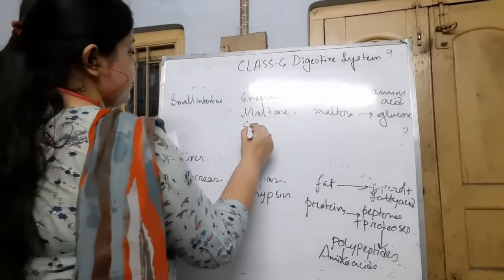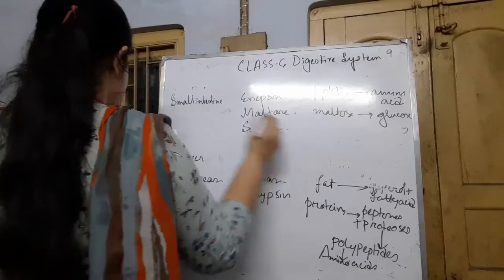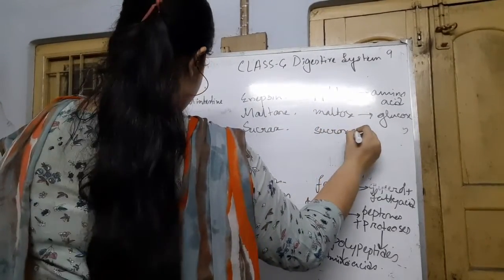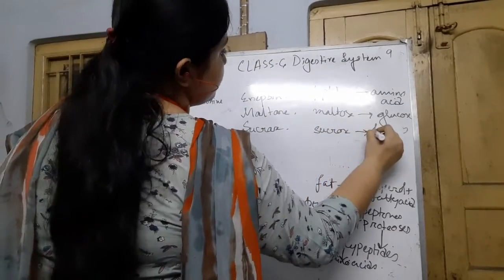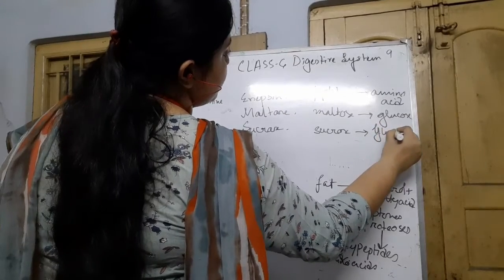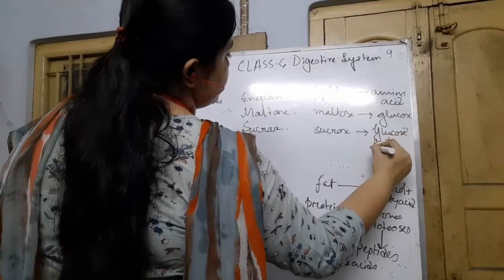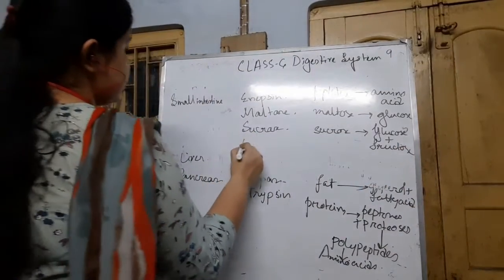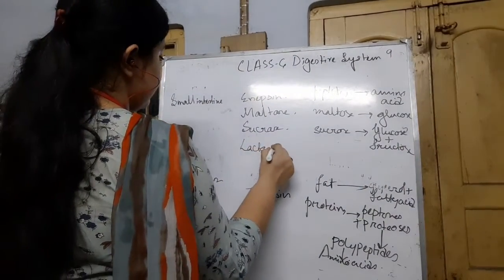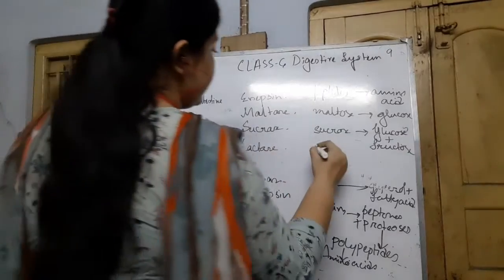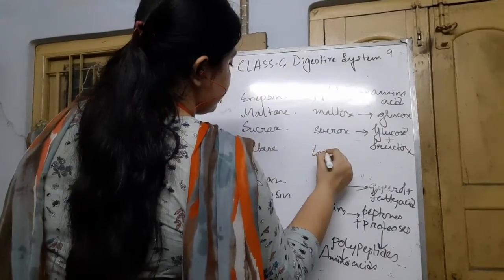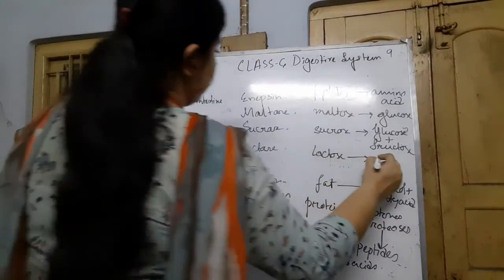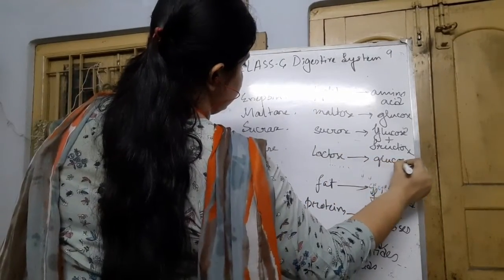Sucrase converts sucrose into glucose and fructose. Also, lactase is present in the small intestine. Lactase converts lactose, or milk sugar, into glucose and galactose.